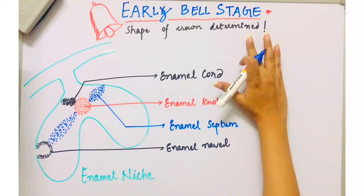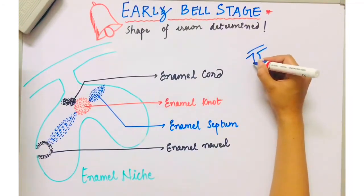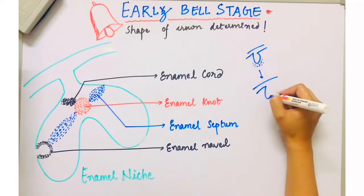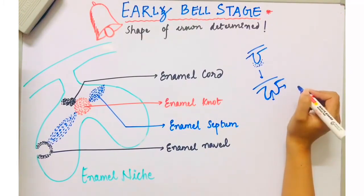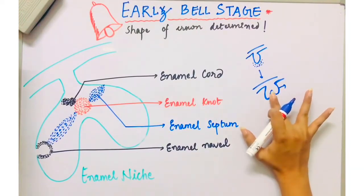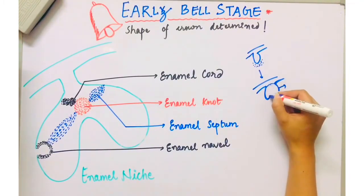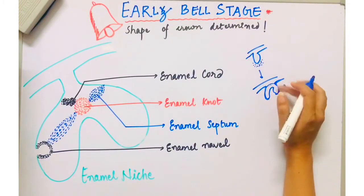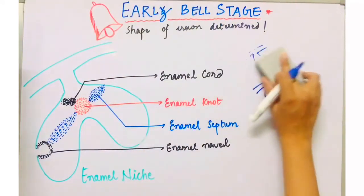What happens is we have already seen that in the bud stage, after the bud stage when there is ectomesenchymal condensation and increased mitotic activity, there is invagination of the enamel organ, and it divides into two layers: inner enamel epithelium and outer enamel epithelium. As the invagination deepens, its margins continue to grow and they assume a bell shape. As they continue to grow, they assume this bell shape.